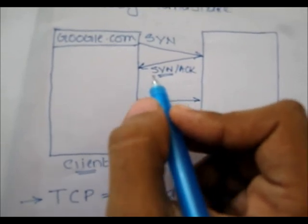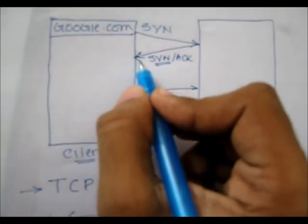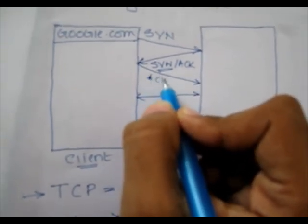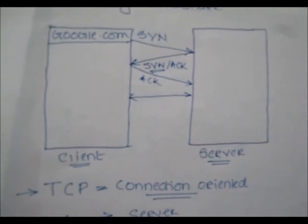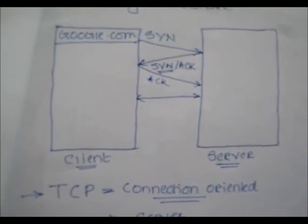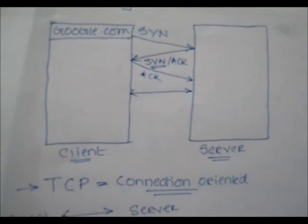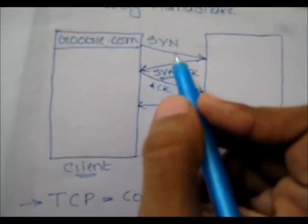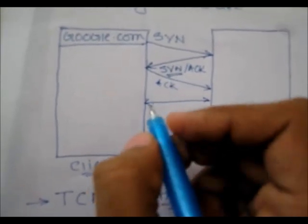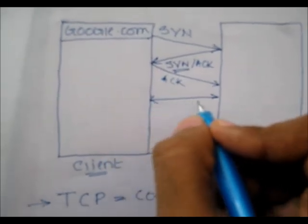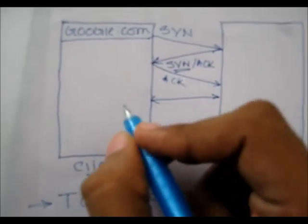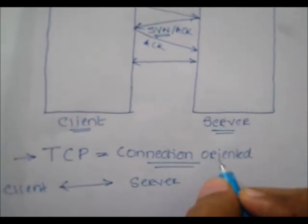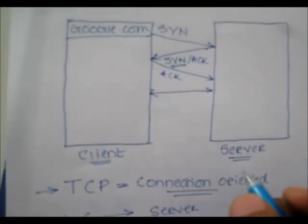Therefore, after receiving the SYN packet from the server, the client will send an acknowledge packet which says: yes, I have received the sequence number and we will be transmitting the data via that. After this three-way handshake occurs, a connection has been established between the client machine and the server, and this is a connection-oriented reliable connection.